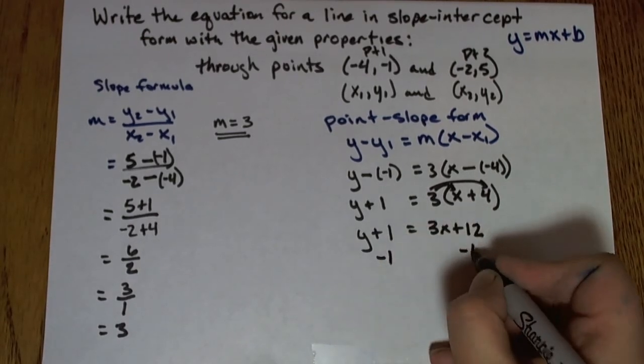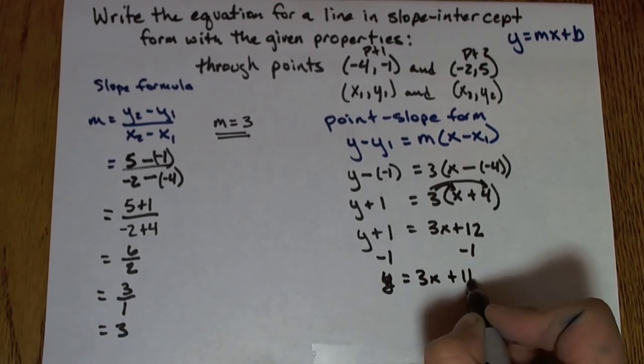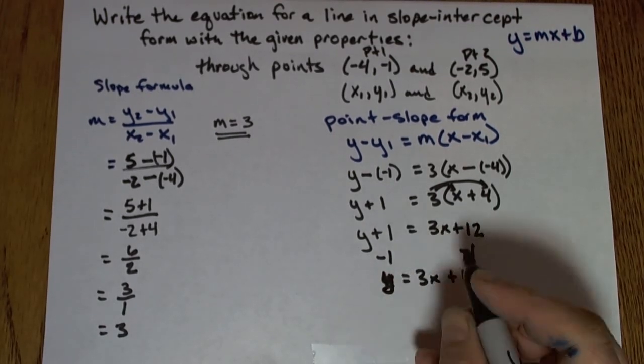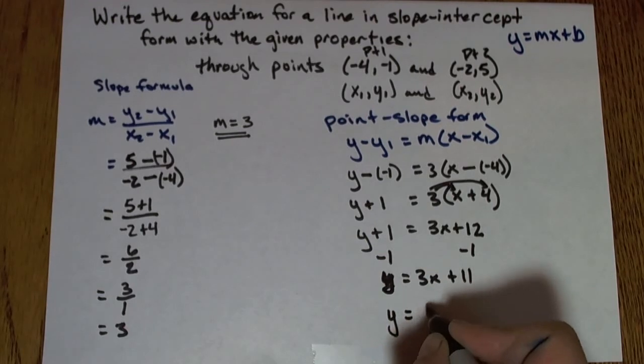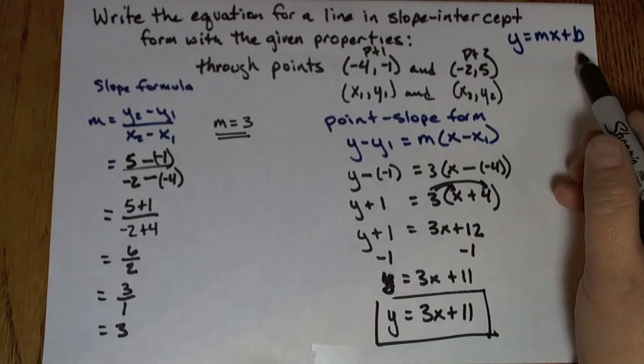Subtract 1 from both sides. y equals 3x plus 11. So now I have y equals 3x plus 11. I'll write that a little more clearly. So I have an equation in slope-intercept form.